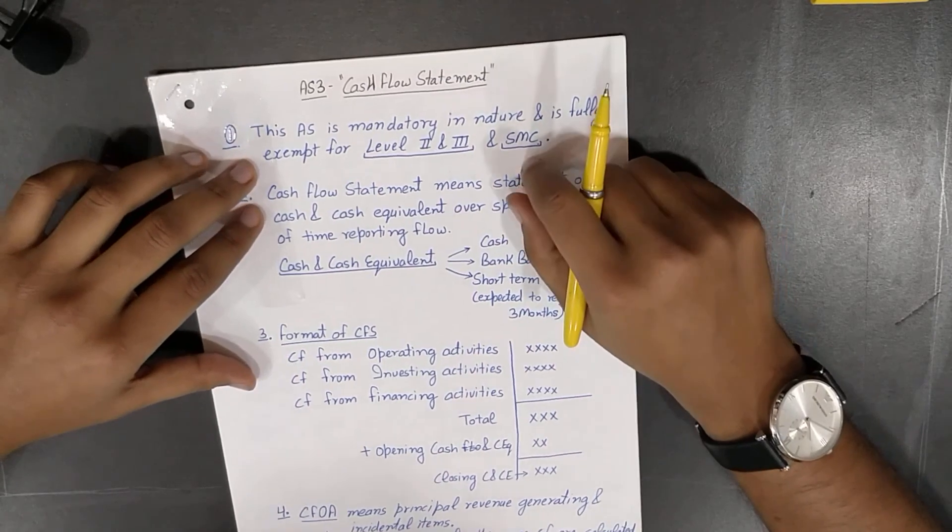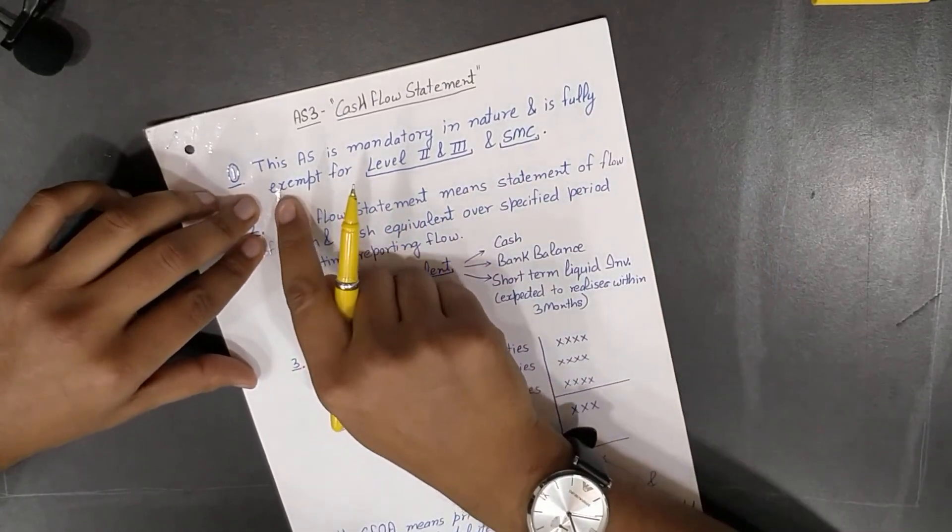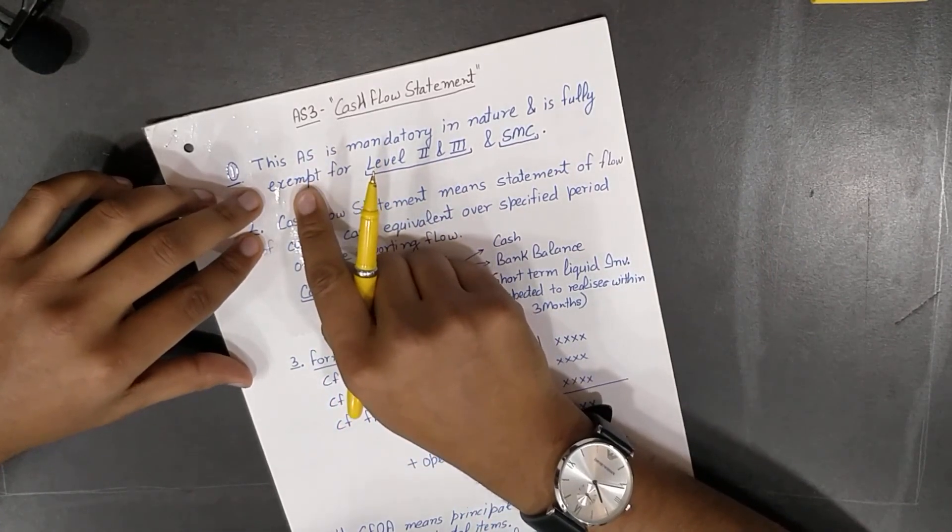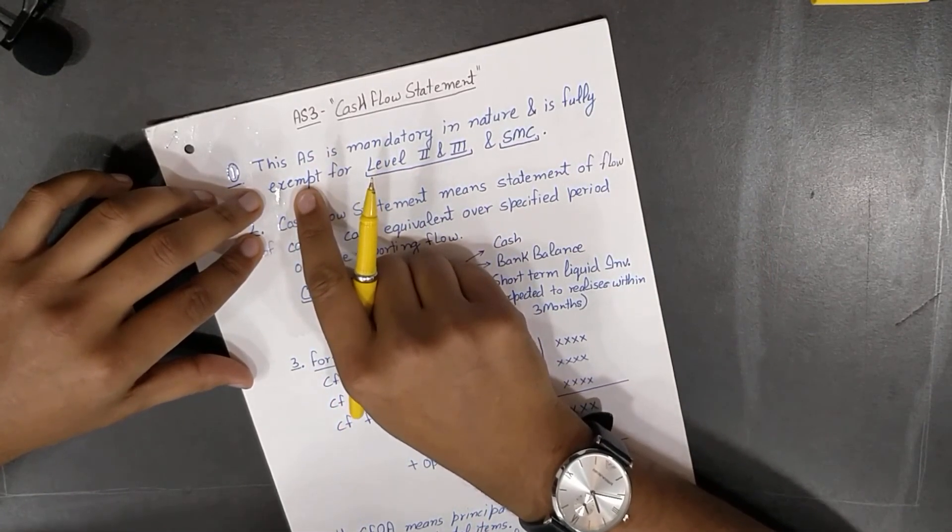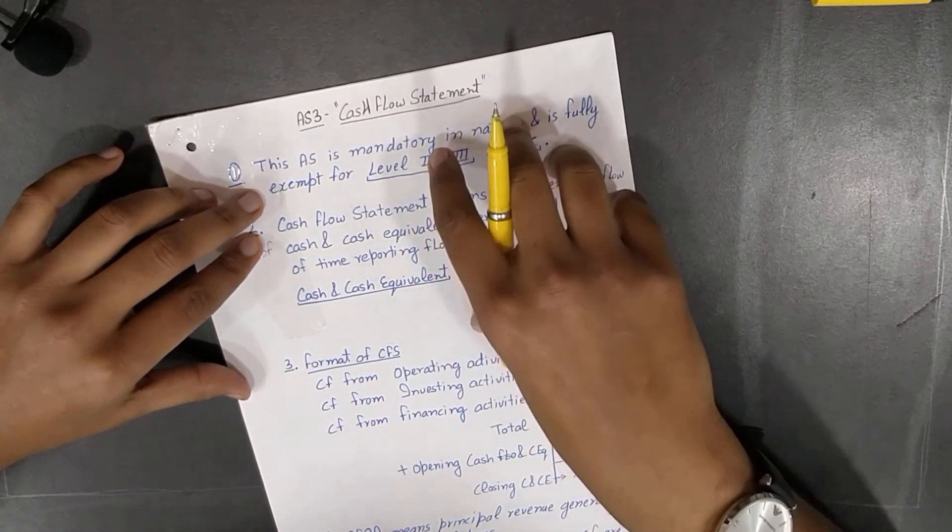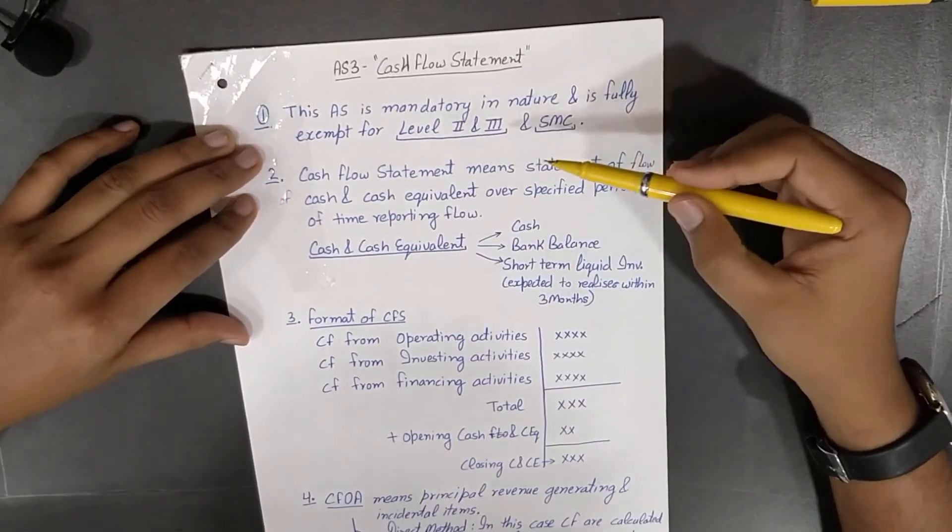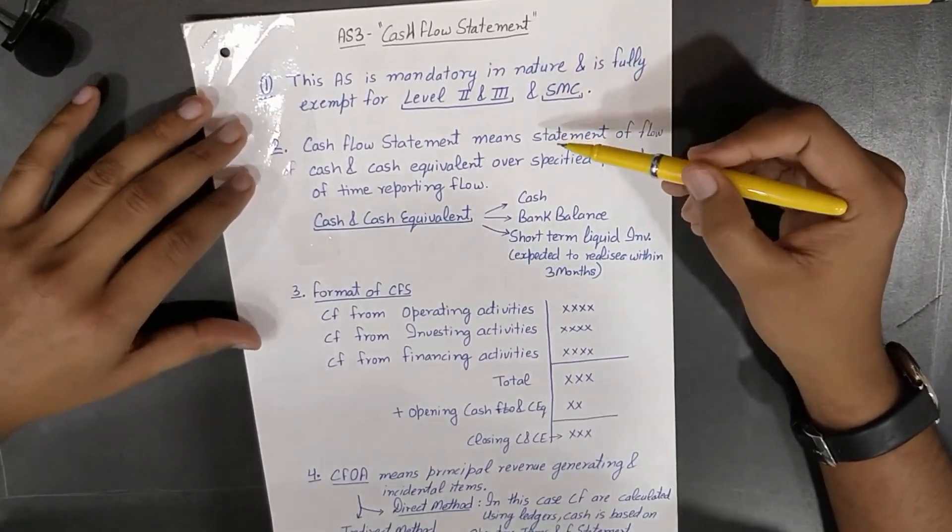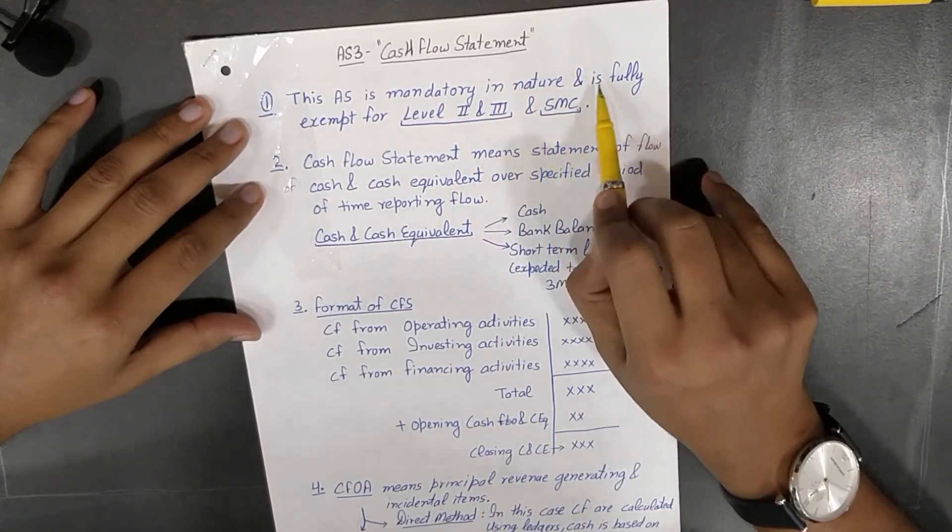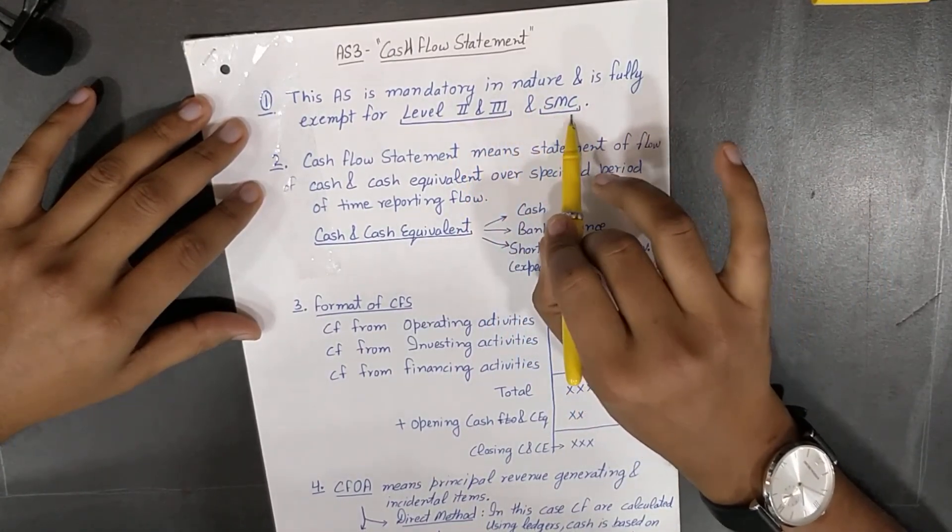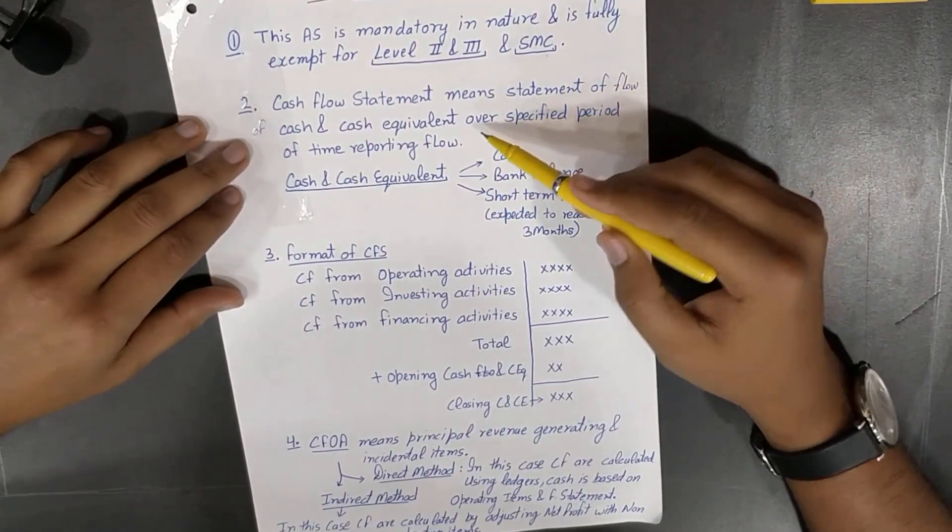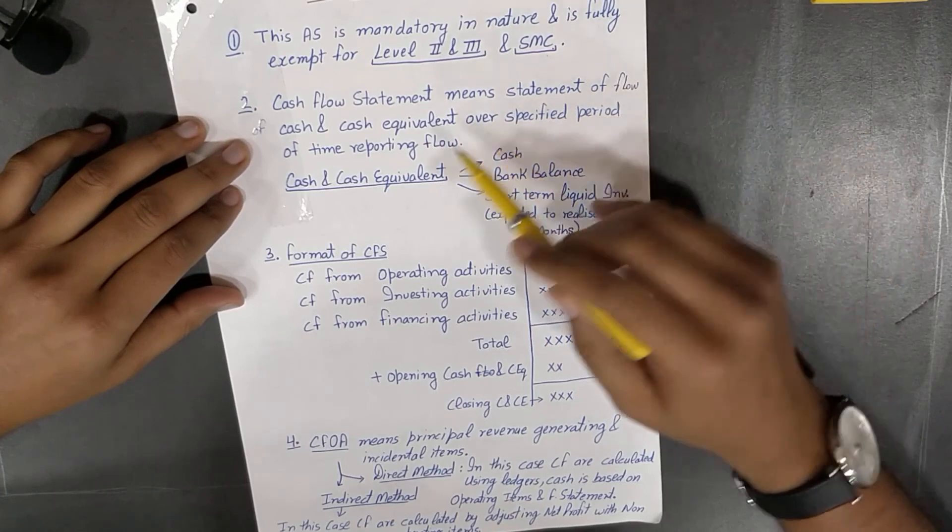Which AS is exempt for which entity, which AS is partially exempt for which SMC, non-SMC, and all the criteria are mentioned below at one place in one video. Let's see cash flow statement - mandatory in nature but fully exempt for Level 2, Level 3, and SMC.